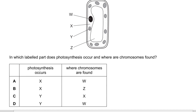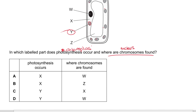Question 5: The diagram shows a palisade mesophyll cell from a green leaf. Photosynthesis occurs in the chloroplast, labeled Y — it's lighter in color and present in more than one. Chromosomes are found in the nucleus, labeled W — it's only one, dark, and bigger. So the answer for photosynthesis is Y and for chromosomes is D (W).